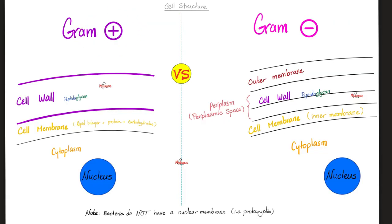The cell wall is made of peptidoglycan — a peptide side chain and a sugar backbone. Gram-positives have teichoic acid in the cell wall and lipoteichoic acid in the inner membrane; gram-negatives do not. Here is a comparison between gram-positive and gram-negative structure. Please pause and review; if you have any problems, refer back to video number two.